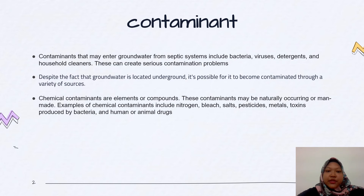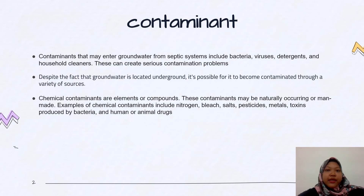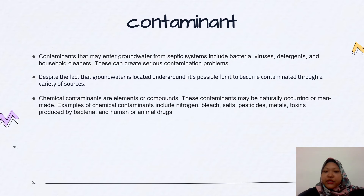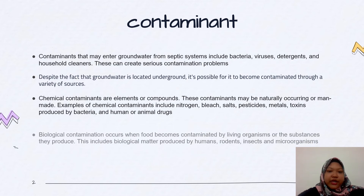Chemical contaminants are elements or compounds. These contaminants may be naturally occurring or man-made. Examples include chemicals such as nitrogen, bleach, salt, pesticides, metals, toxic products, bacteria, and also human or animal drugs.